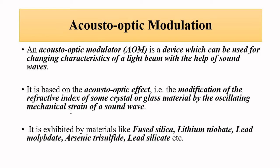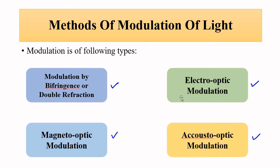This method is basically the inducement of birefringence property. We have already discussed birefringence or double refraction — here we want to induce the property of birefringence indirectly with the help of sound waves. In all of these methods of modulation we have used some external agent: in electro-optic modulation we used an electric field, in magneto-optic modulation we used a magnetic field, and here we are using sound waves.